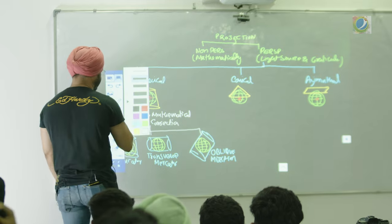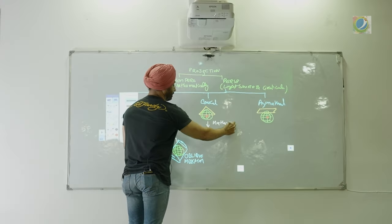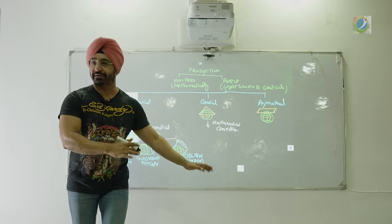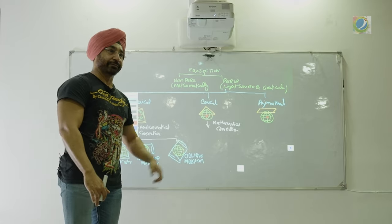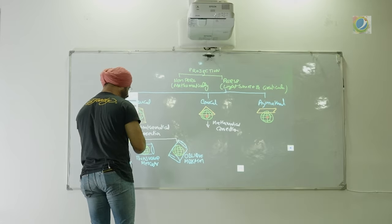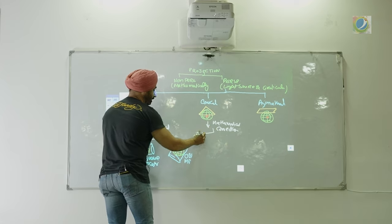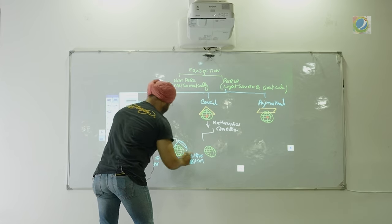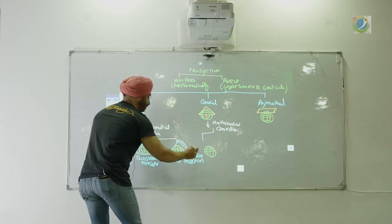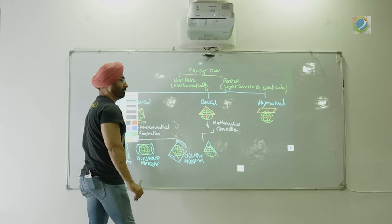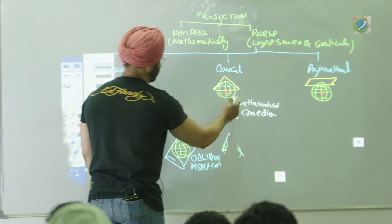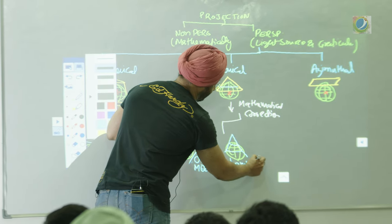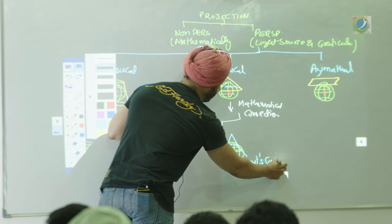For conical projection, we again made mathematical corrections. Instead of choosing one standard parallel, we chose two standard parallels. So with the same light source setup, instead of one standard parallel we had two standard parallels — and this became Lambert's Conformal Conical projection.